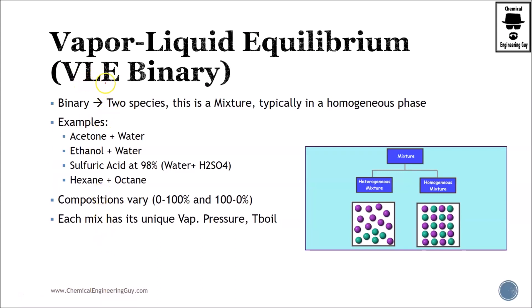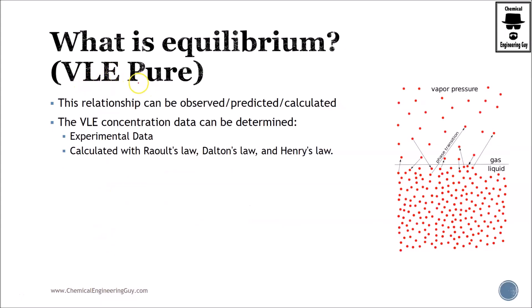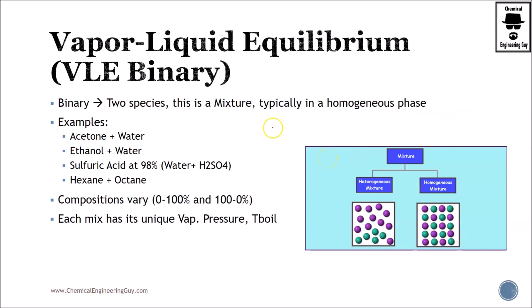So now that we have VLE for pure substances, which is pretty easy because you only have either vapor phase or liquid phase and one single substance, let's further our knowledge for binary systems, which are two species. This means a mixture, typically a homogeneous phase mixture.